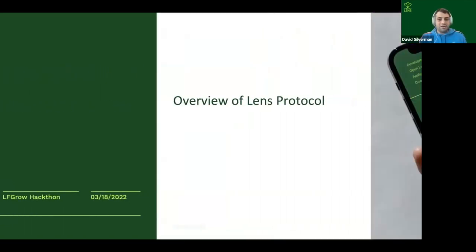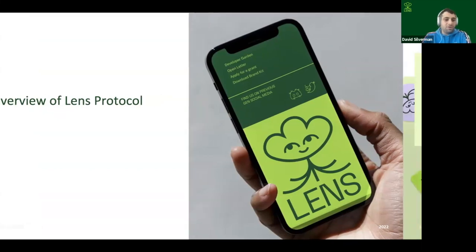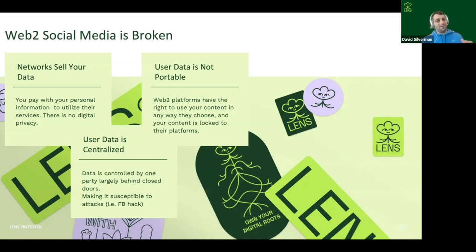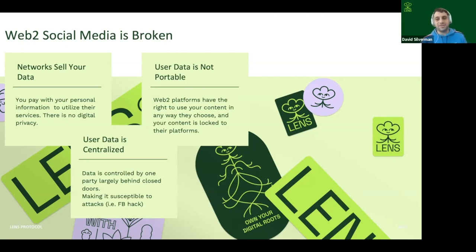Let's jump into a quick overview of Lens Protocol. Web2 social media is broken. Networks sell your data — you're paying with your personal information to get distribution. There's no such thing as privacy. The reason you're not paying for Facebook or Twitter is they're taking your data and selling ads. Additionally, your data is not portable. As a creator, I'm bound to the network I'm working with. If Facebook or YouTube decides to turn me off, I've lost my audience, my content, and my connection to my fans.